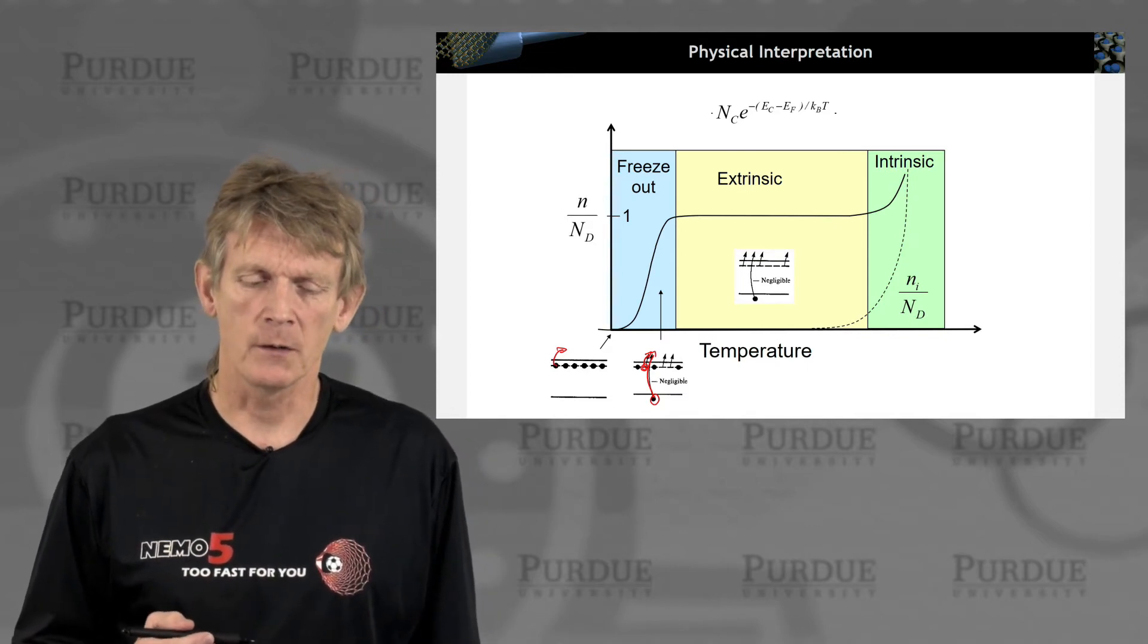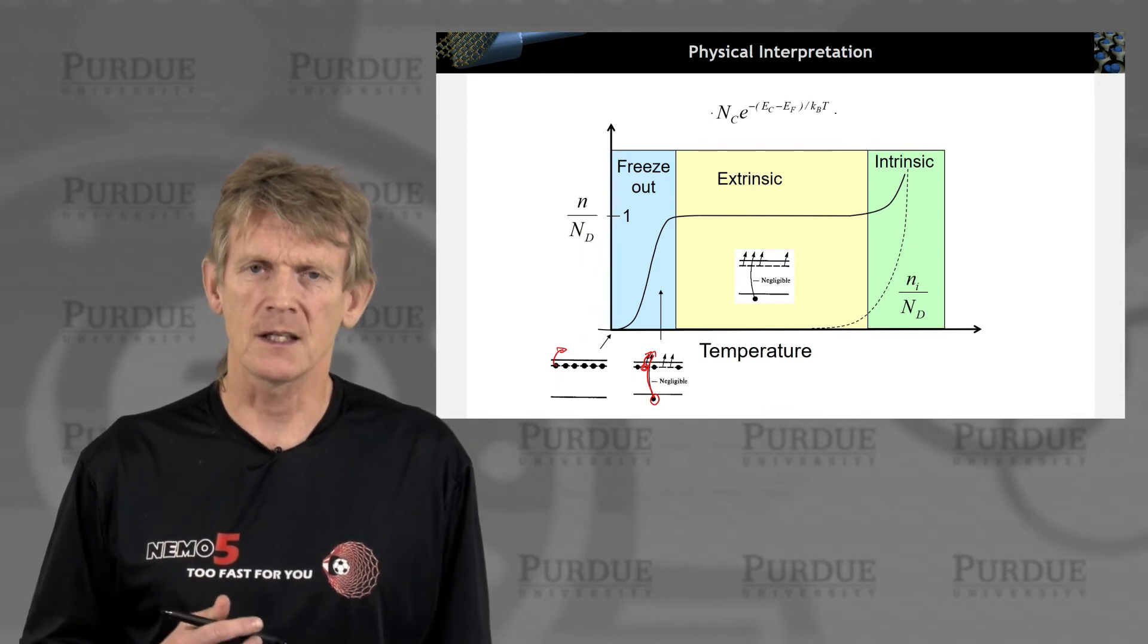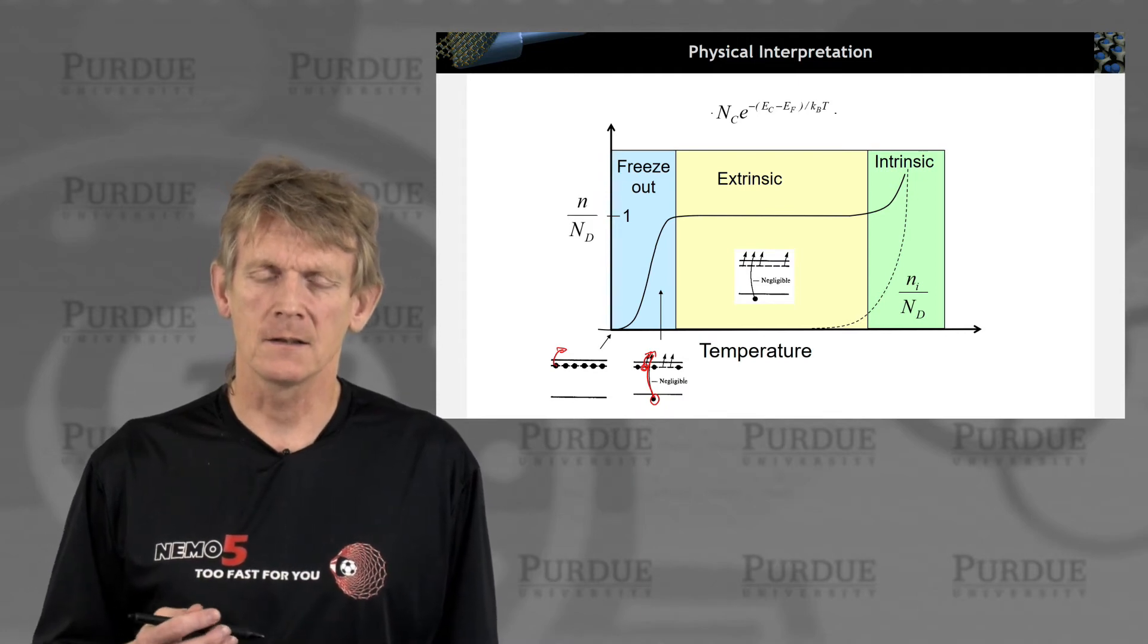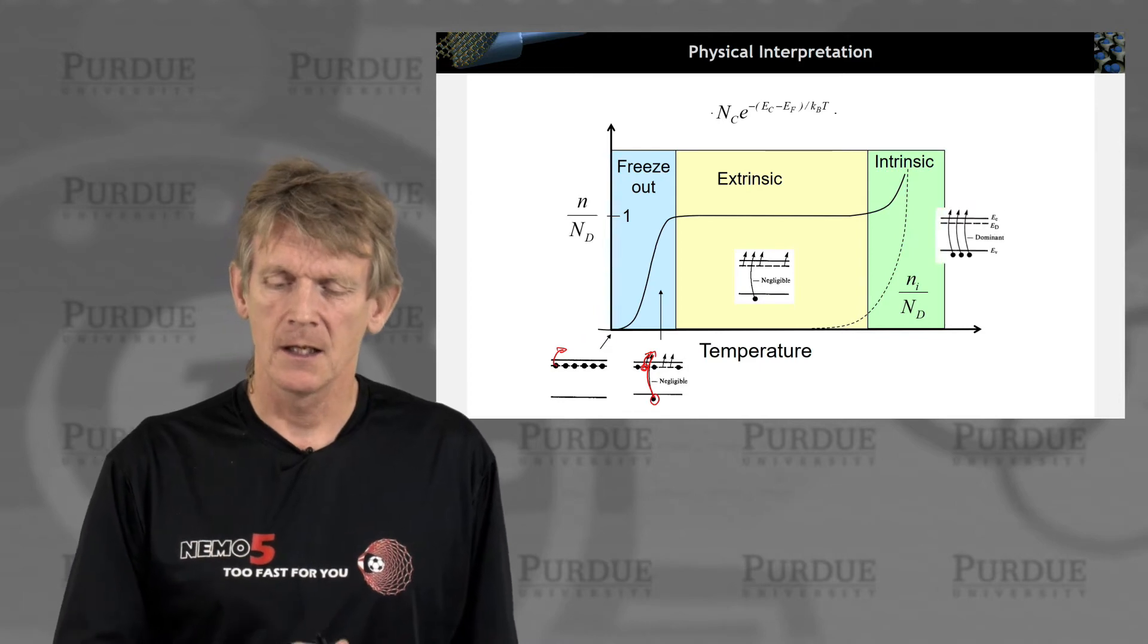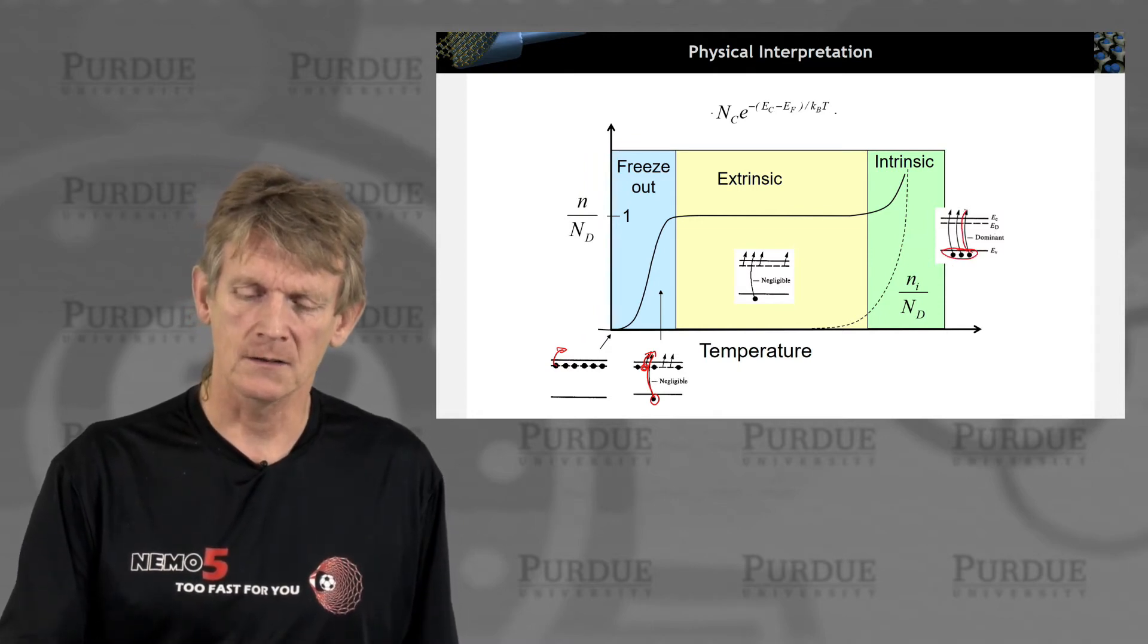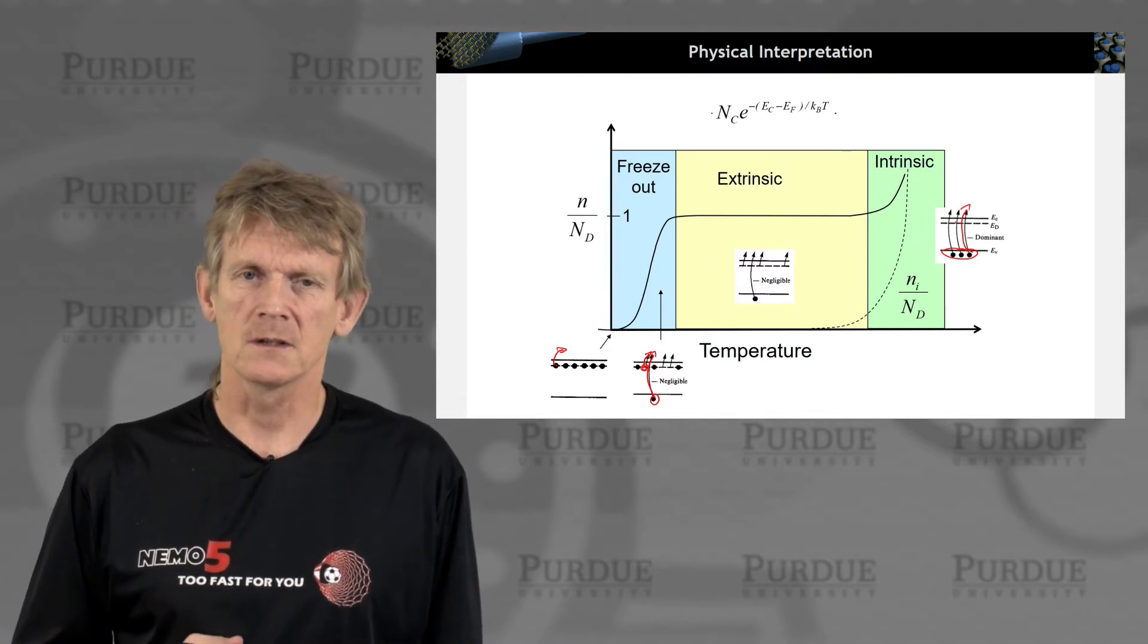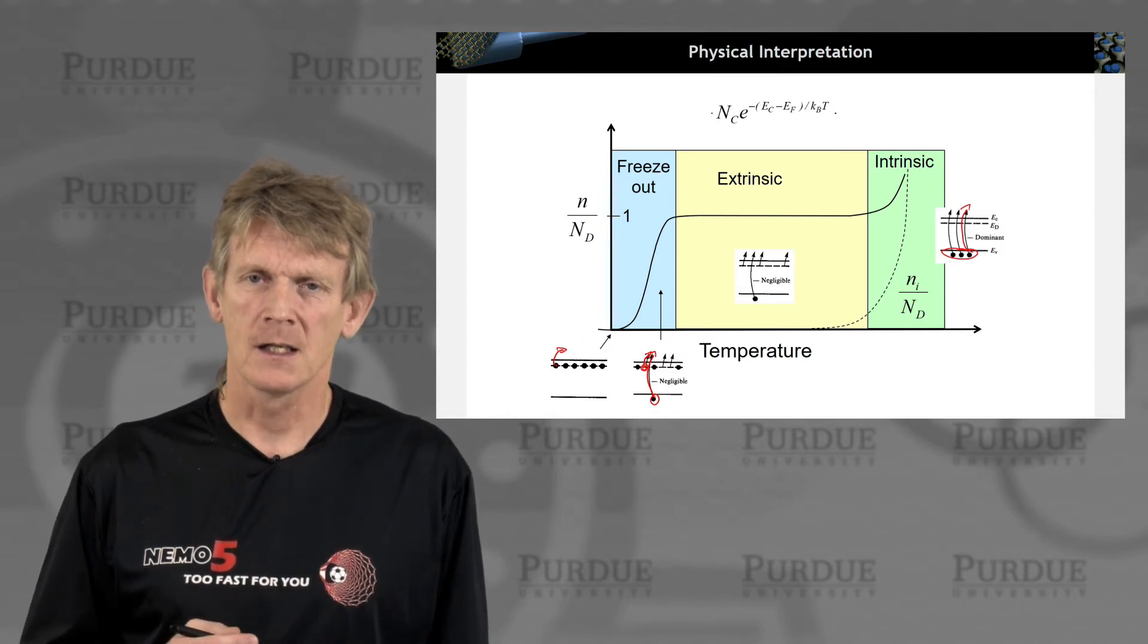In the extrinsic region, we have reached the stage where basically all of the donor electrons have been excited out of their donor sites into the semiconductor overall. And again, there's negligible excitation from the valence band. And here, in the intrinsic region, you have the dominant excitation where electrons are beginning to be excited from the valence band into the conduction band, and all of the donors have been already ionized. But now there's way more electrons to be excited out of the valence band.